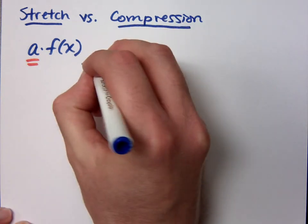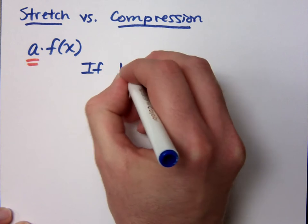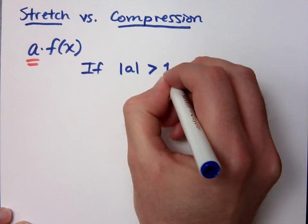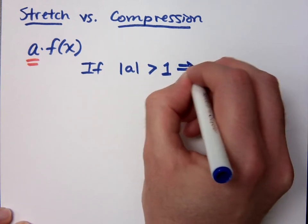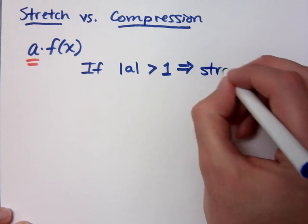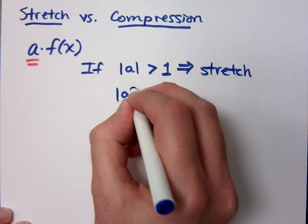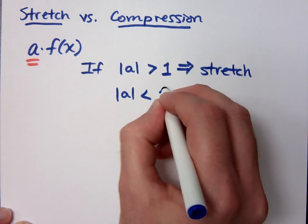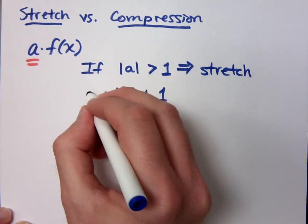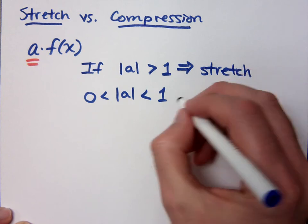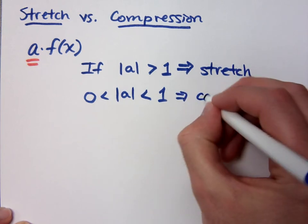So here's the thing. If the absolute value of that guy is greater than 1, that means that you have a stretch. But if this absolute value is less than 1, of course you have to make sure this is greater than 0, that means we have a compression.